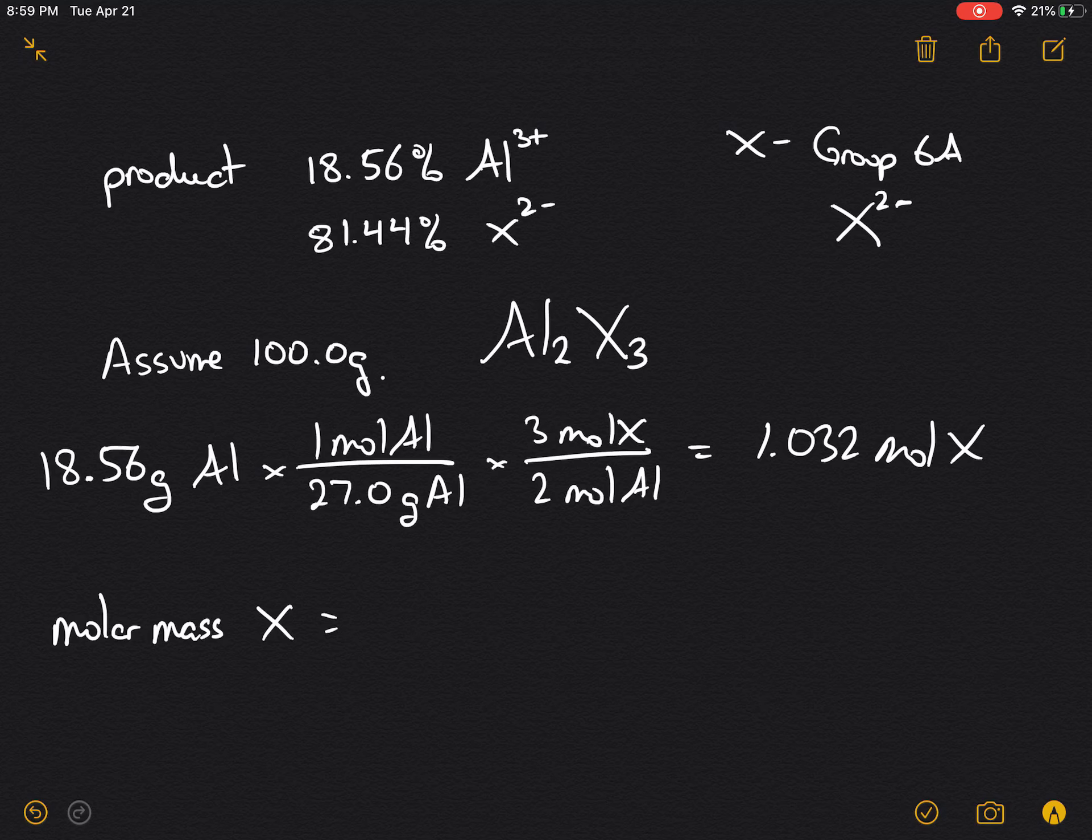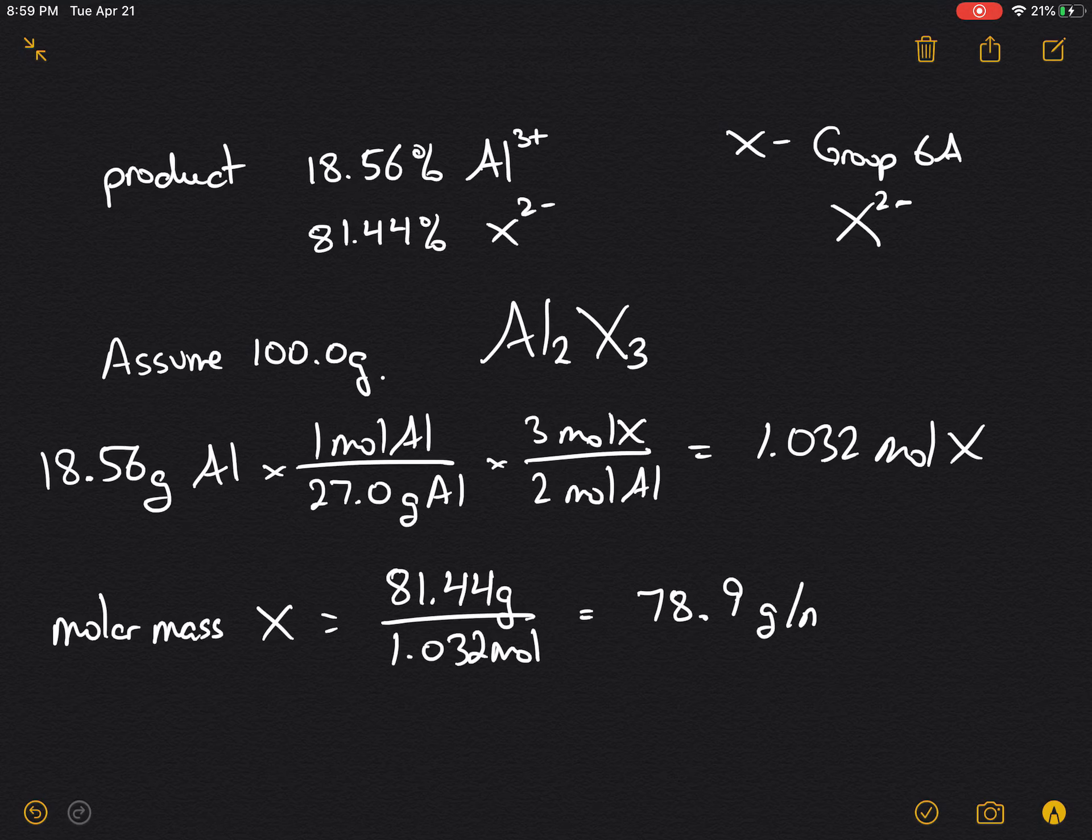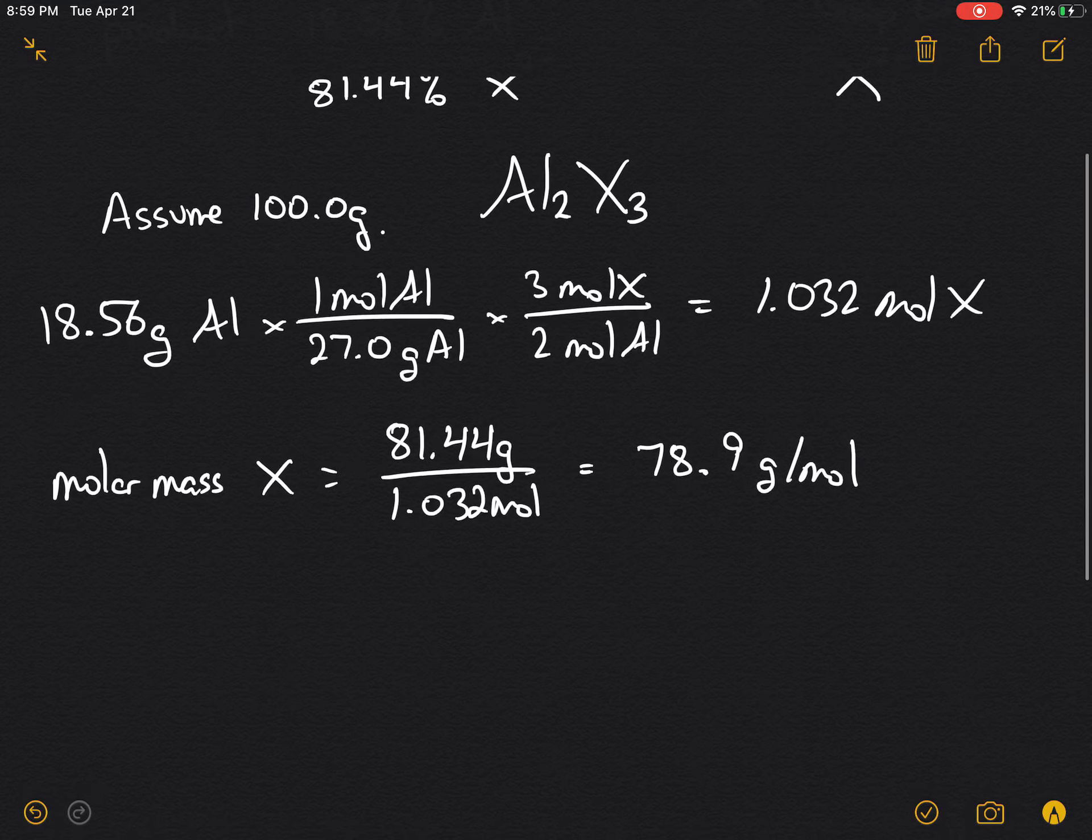We can now solve for the molar mass of element X, which would be 81.44 grams divided by 1.032 moles. This will yield 78.9 grams per mole, which corresponds closest to the element selenium.